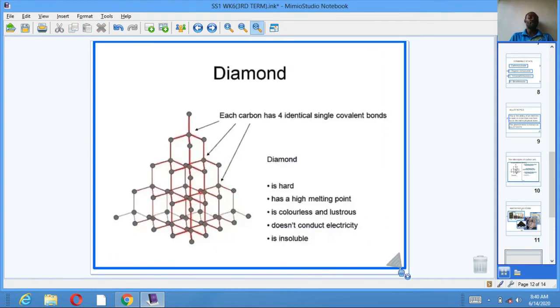Diamond. Diamond is one of the hardest substances ever known. It is hard, has a high melting point, is colorless and lustrous. It doesn't conduct electricity. It is insoluble in water but soluble in organic solvents. It is octahedral in shape. Its density is 3.51. Its refractive index is 2.45. It is unreactive, but when burnt at 900 degrees C, it changes to CO2, and when subjected to a temperature of 1800 degrees C, it forms graphite.